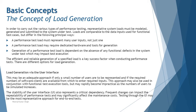Generation of a performance test load is dependent on the absence of any functional defects in the system under test, which may impact test execution. As discussed in a previous tutorial, overall scenario executions are recommended to be conducted only after system testing is done — meaning the entire application is stable before starting performance testing. Functional issues and defects can interrupt your performance execution, so you need to make sure those are resolved before getting started. The efficient and reliable generation of specified load is a key success factor when conducting performance tests.